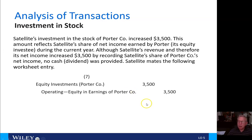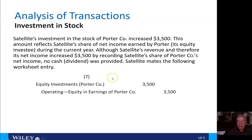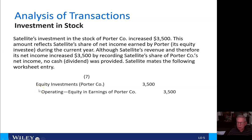For investment in stock, Satellite's investment in stock of the Porter Company increased $3,500. This amount reflects Satellite's share of net income earned by Porter, its equity investee, during the current year. Although Satellite's revenue and therefore its net income increased by $3,500 by recording Satellite's share of Porter Company's net income, no cash dividend was provided. Satellite makes the following worksheet entry by debiting equity investments and crediting equity in the earnings of Porter Company for $3,500.